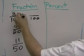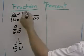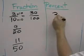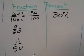All I have to do is multiply both the numerator and the denominator by 10. 10 times 10 is 100. 3 times 10 is 30. So 30 out of 100 is 30%. So 3 tenths is 30%. Similarly,